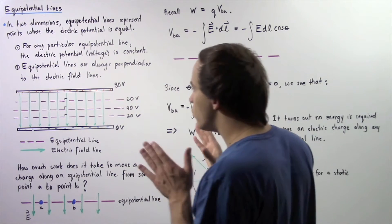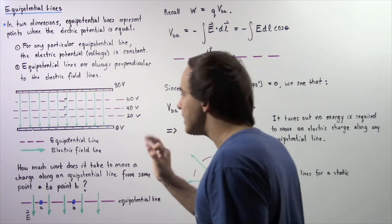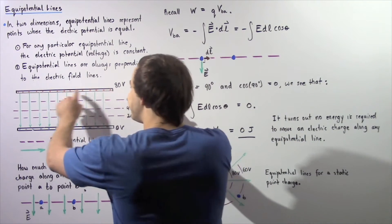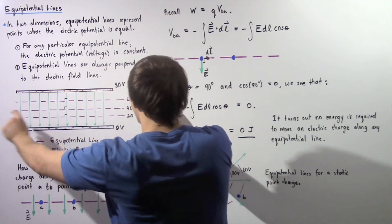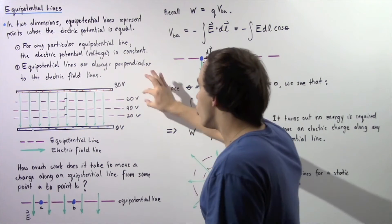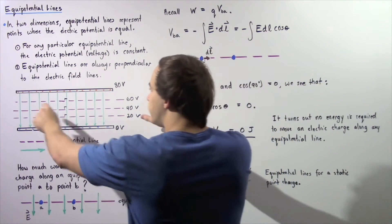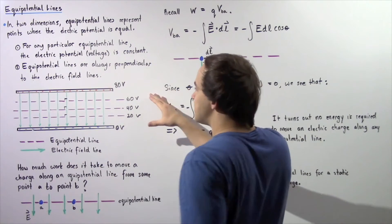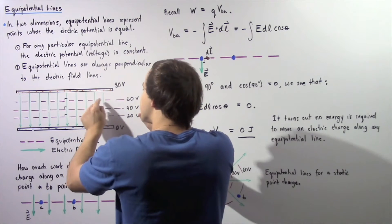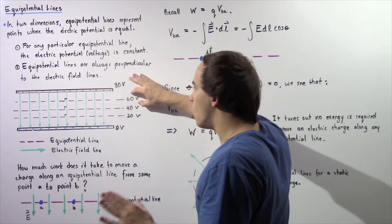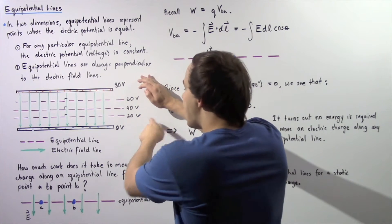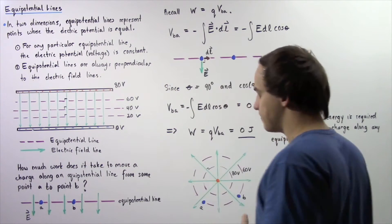In the following diagram, we only showed three possibilities for Equipotential Lines: the 60 volt, the 40 volt, and the 20 volt Equipotential Lines. So what this basically means is if we take the topmost Equipotential Line, no matter what point we choose along this line, the voltage will always be 60 volts. The same exact thing can be said about the other Equipotential Lines.